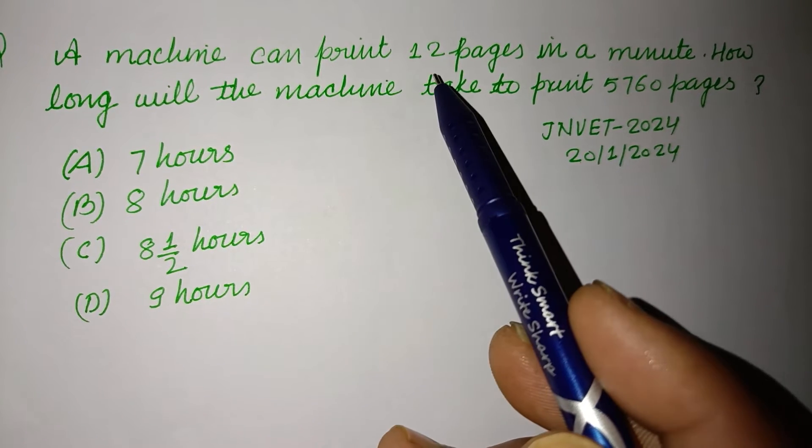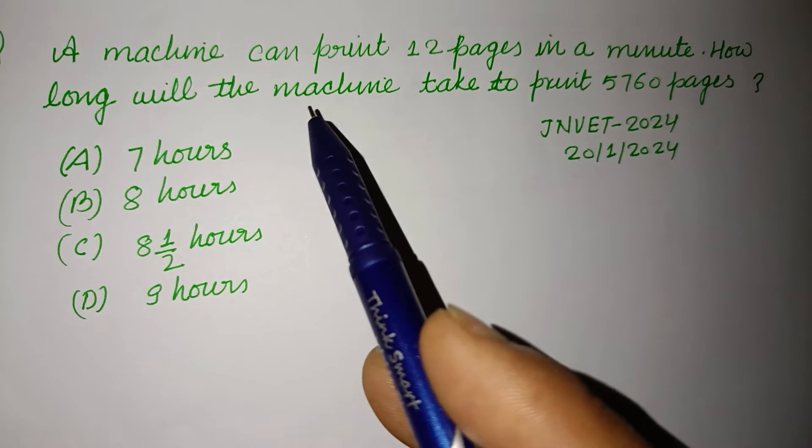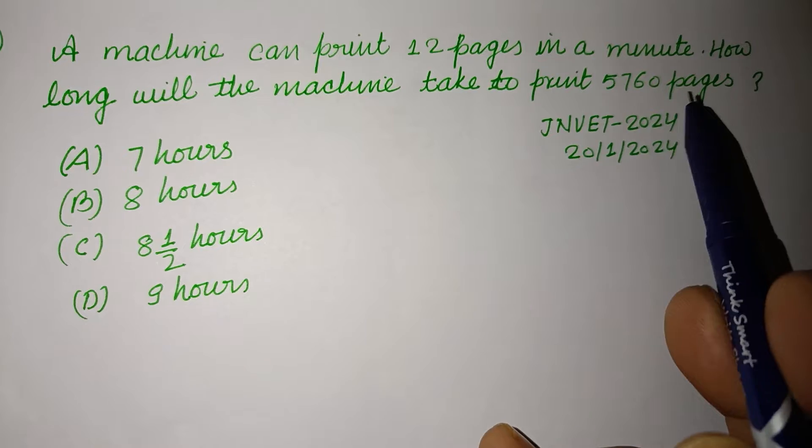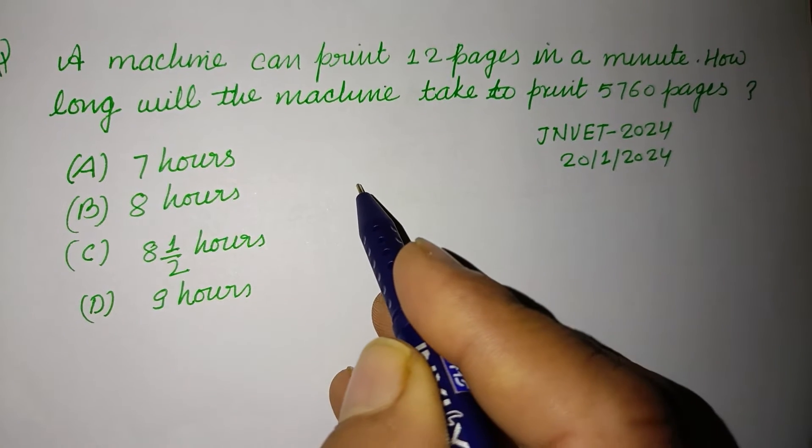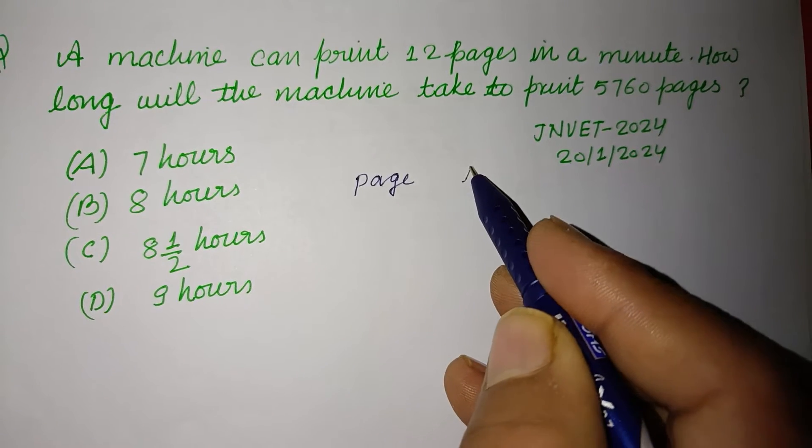A machine can print 12 pages in a minute. How long will the machine take to print 5760 pages? So pages, page and time.